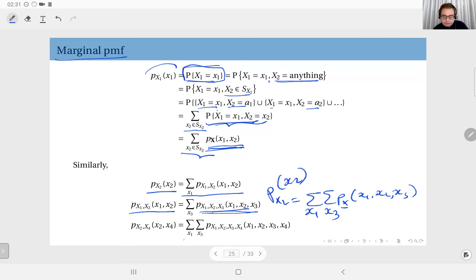And for instance, here is a four-dimensional random vector. If you sum this joint PMF for all possible values of x1 and x3, you get the joint PMF of x2 and x4, which are the remaining ones. So this is the general idea.